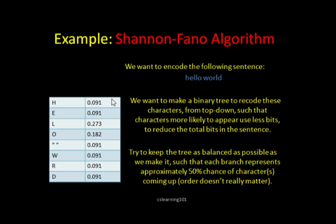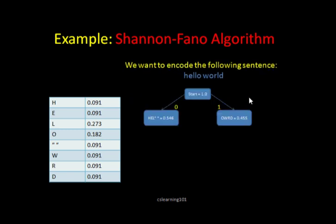Okay, let's begin with the Shannon-Fano algorithm. Remembering what the probabilities are here, we want to make a binary tree to recode these characters from top down, such that the characters most likely to use as few bits as possible. To keep the tree as balanced as possible, we make it such that each branch, from top to bottom, from each node, will represent roughly 50% of the chance of the character coming up. That means that when we make the tree, we want to keep it as balanced as possible as we go down. So let's begin.